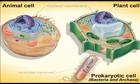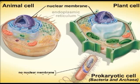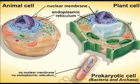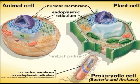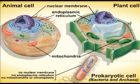Eukaryotic cells contain a nuclear membrane, endoplasmic reticulum, and organelles such as mitochondria and chloroplasts, whereas prokaryotic cells do not.